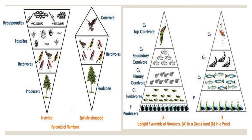The pyramid of biomass is used to overcome the shortcomings of the pyramid of numbers. In this approach, individuals at each trophic level are weighed instead of being counted. For most ecosystems on land, the pyramid of biomass has a large base of primary producers with smaller trophic levels above. In contrast, in many aquatic systems, the pyramid of biomass assumes an inverted form.